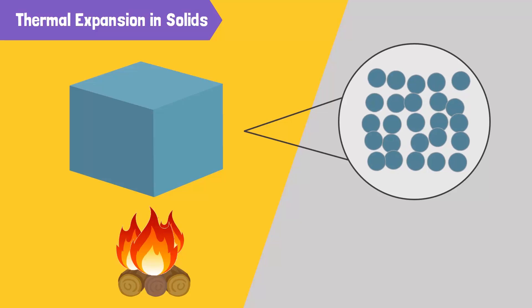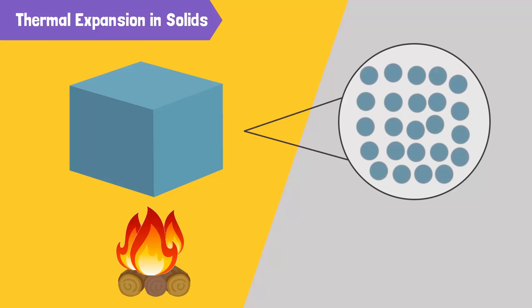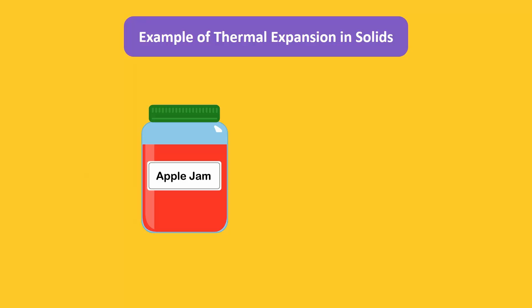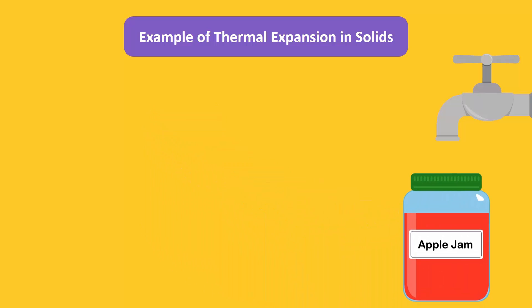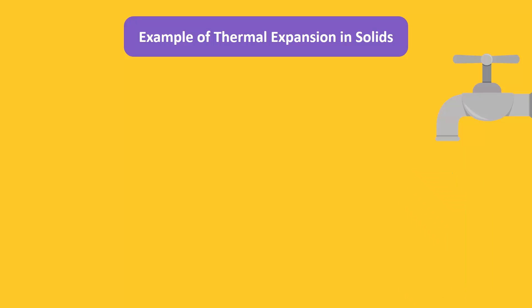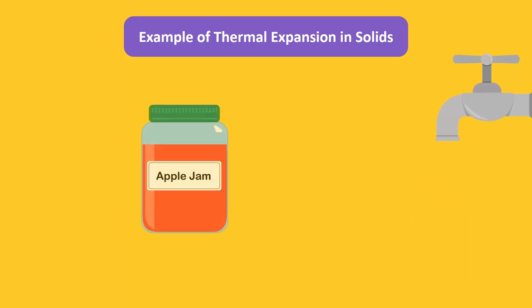This takes up more space and the solid matter expands. Here's an example of expansion in solids: when you can't open a tight jar, it is recommended that you place it under hot water for a minute. The metal lid will expand because it heats up and won't be so tight anymore — now you can open it easily.